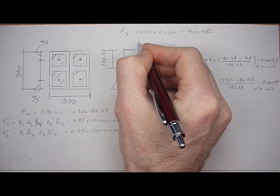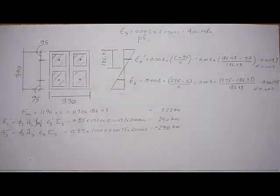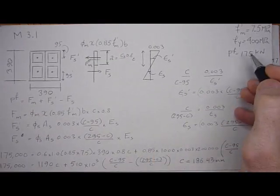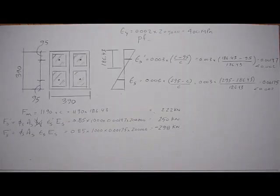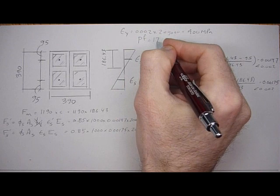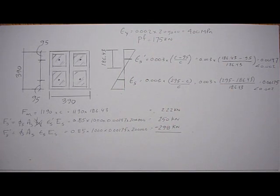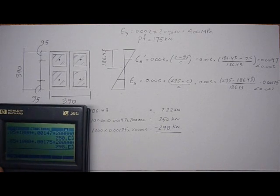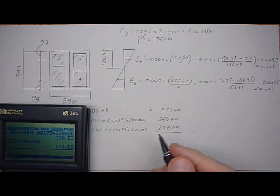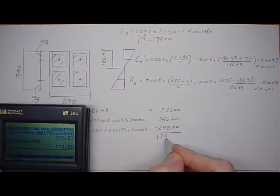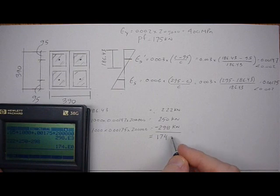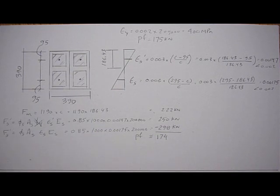The P factor on this section was 175 kilonewtons, the acting load. So we can check if we add these up—they should equal 175. It should balance: 222 plus 250 minus 298 equals 174, which is approximately P factor. So it does balance, and right now all our assumptions are correct.